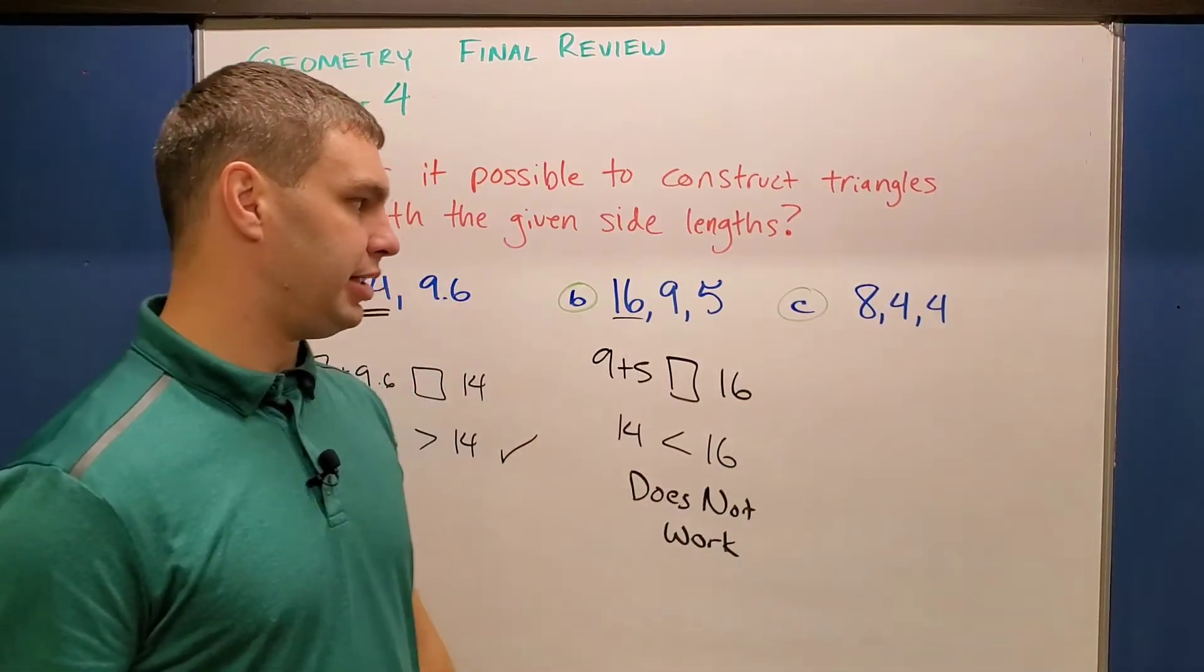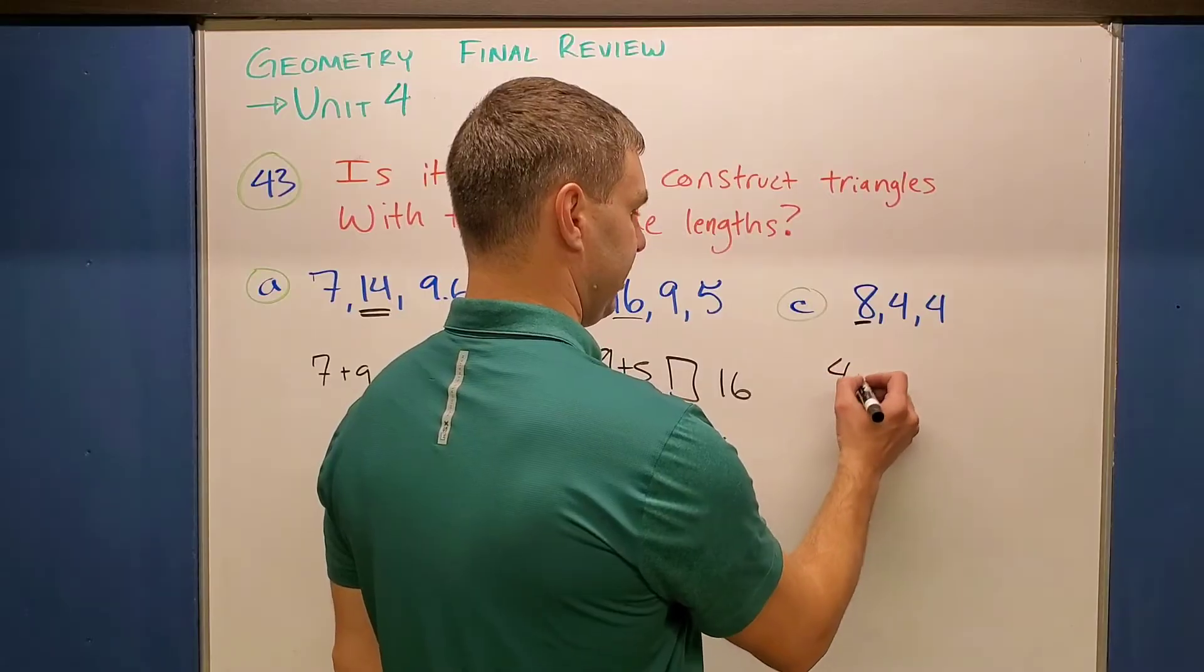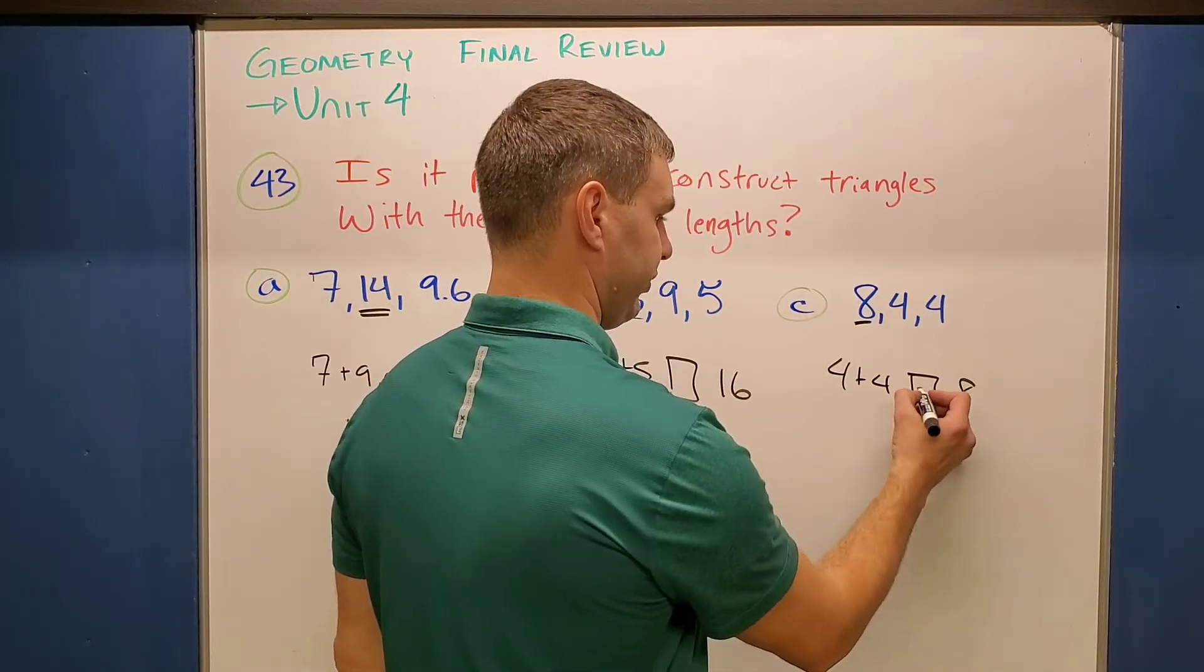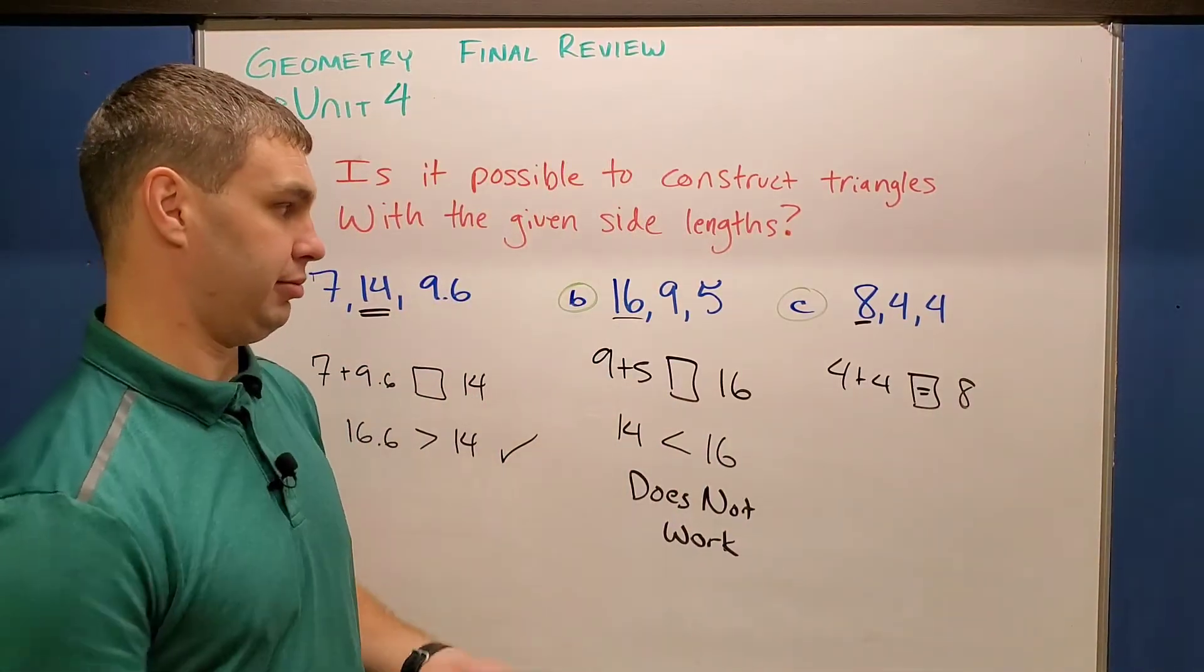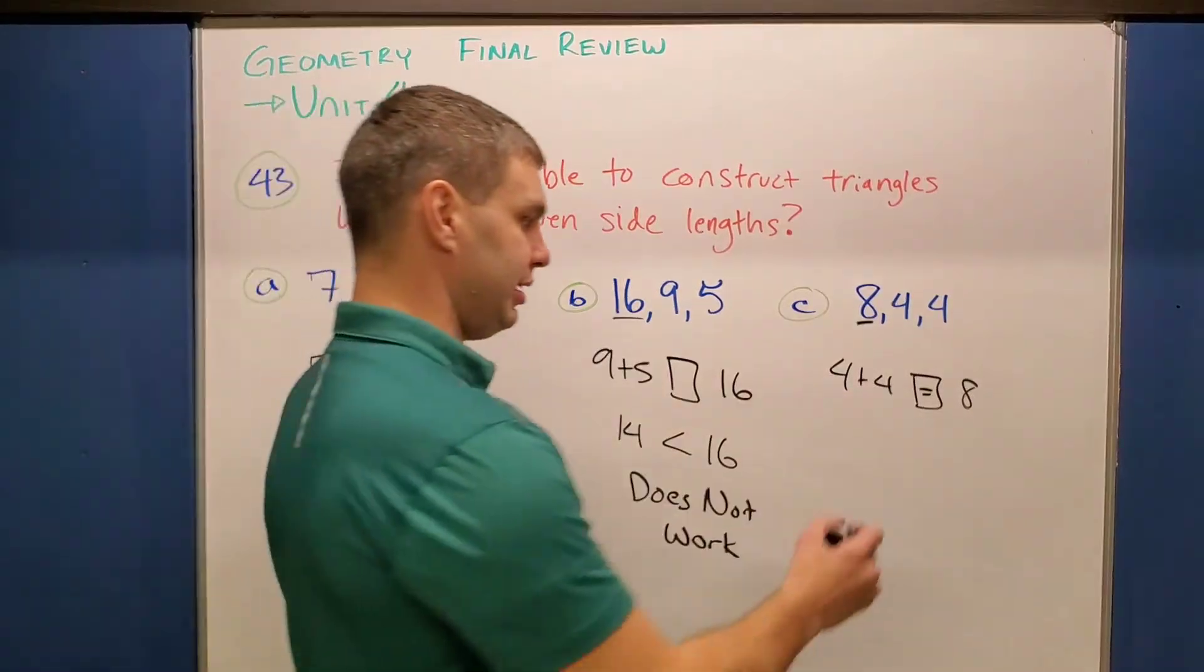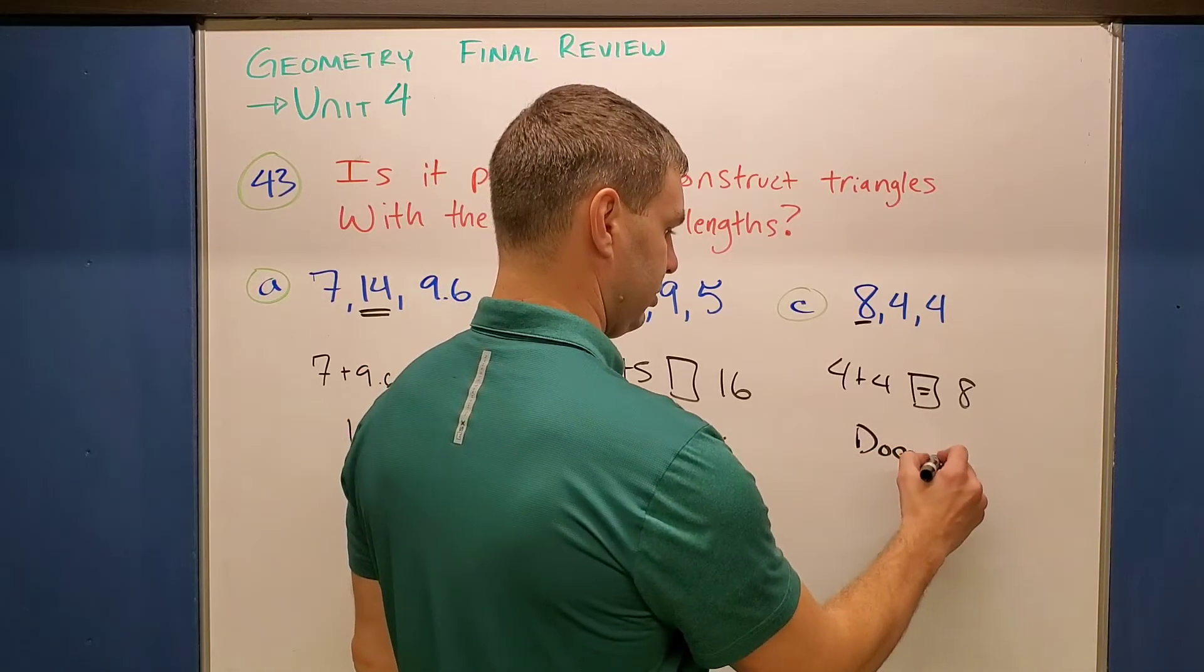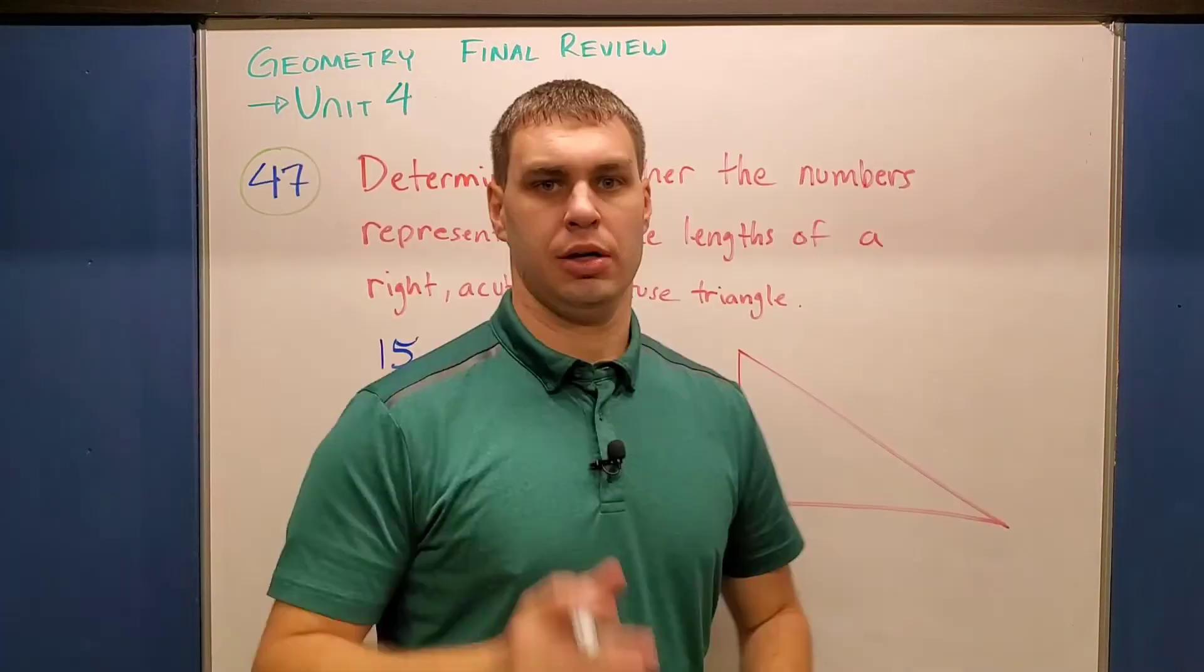And then the last one here, letter C, is eight, four, and four. Again, my largest side is eight. So if I add up the two smaller sides, four plus four is eight. And of course we can fill this in with an equal to sign. Again, that's not bigger, right? It has to, these two smaller ones have to add it to be something bigger than your third side. It's not equal to, so this does not work.